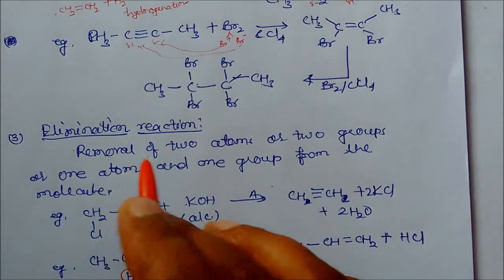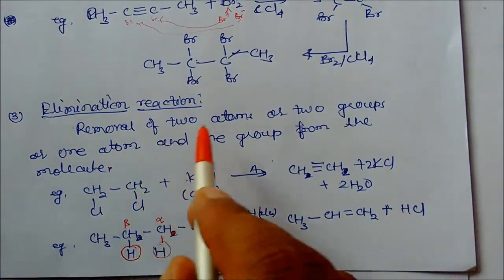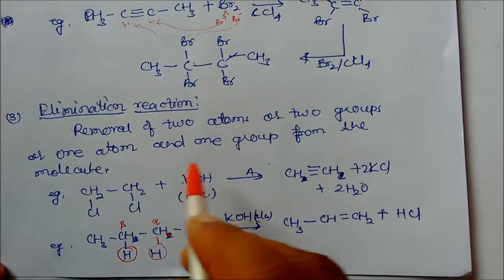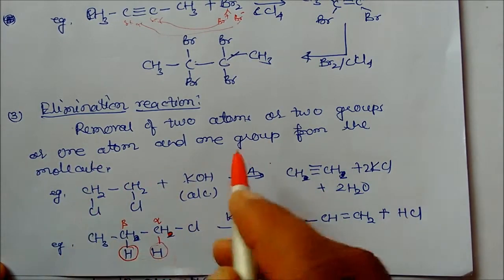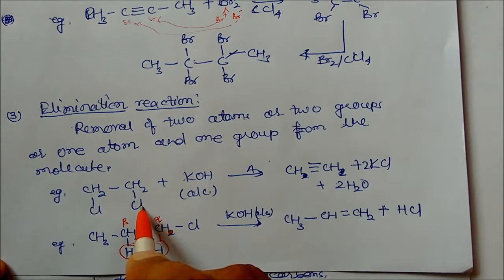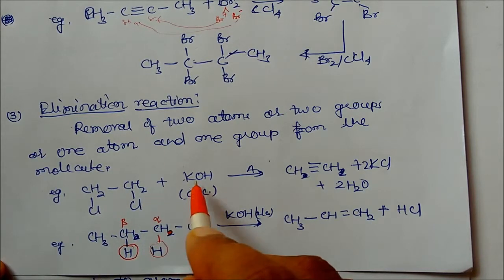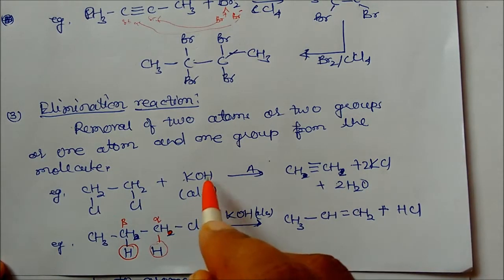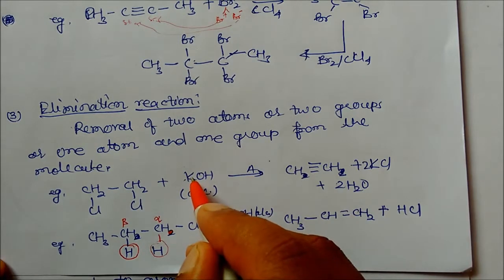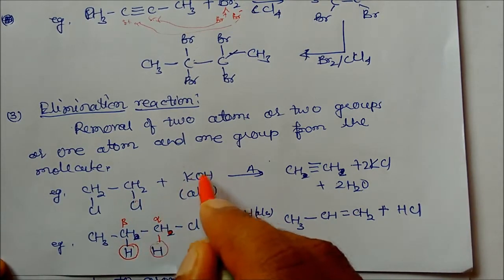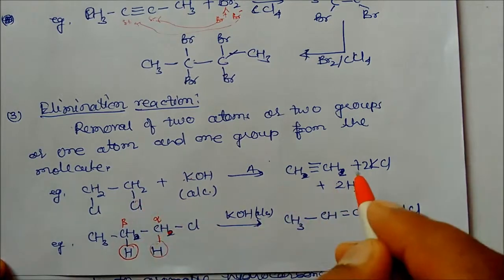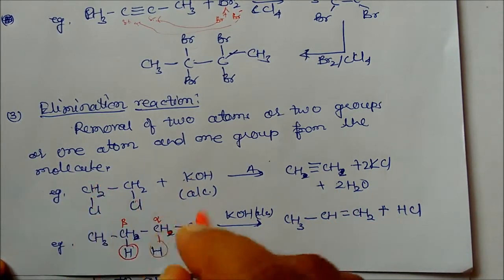Next is elimination reaction — the removal of two atoms or two groups from the same molecule. For example, a compound with two Cl atoms treated with alcoholic potassium hydroxide on heating: potassium combines with Cl, and OH combines with one hydrogen. So one hydrogen and one Cl come out.